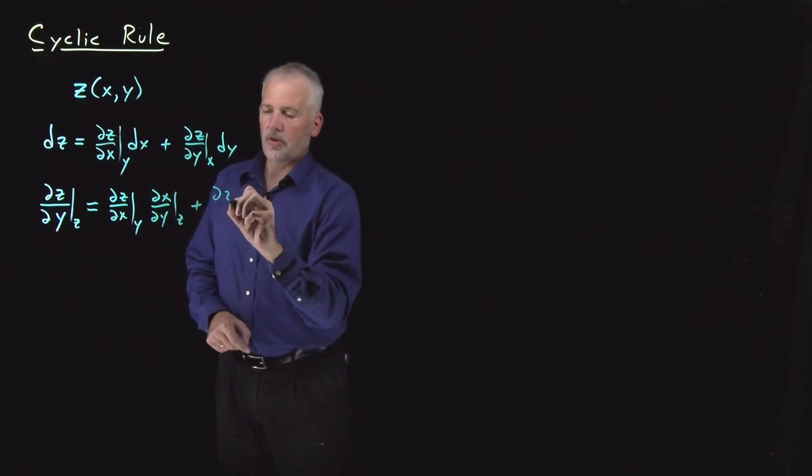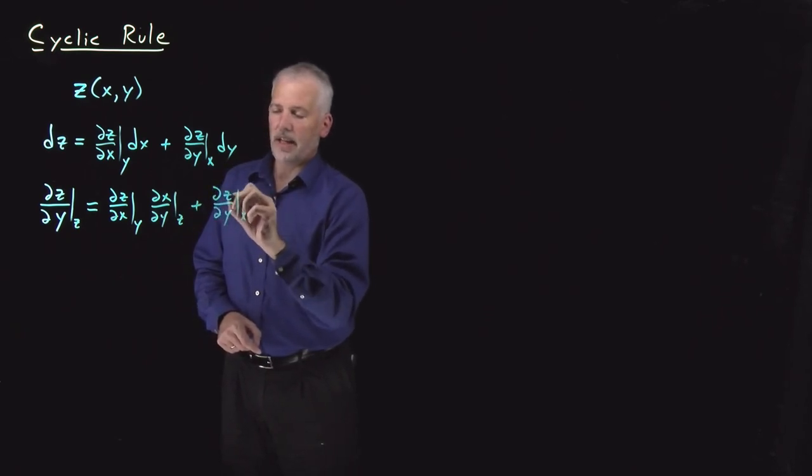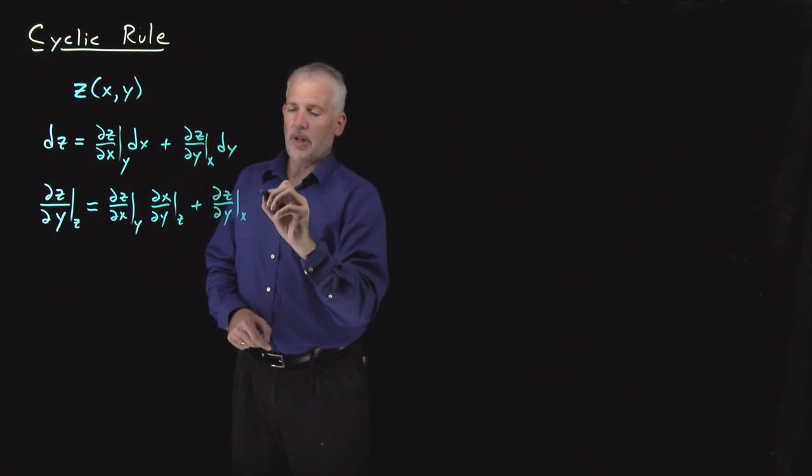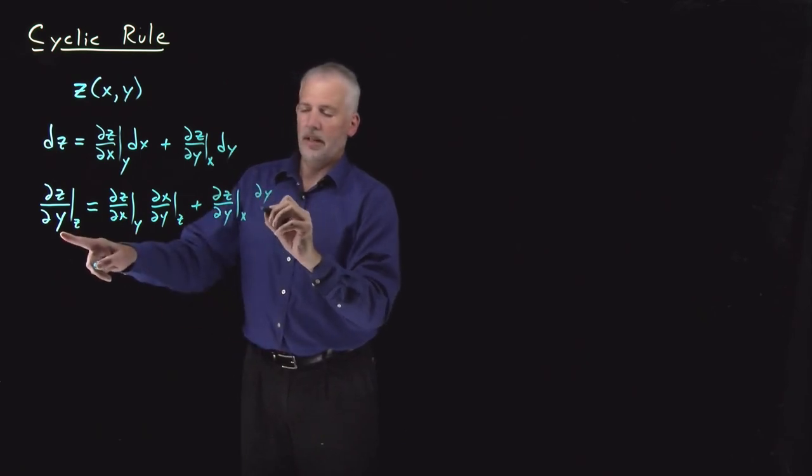And the second term looks like the ∂z/∂y at constant x that I already had, now multiplied by ∂y/∂y at constant z.